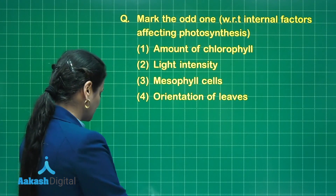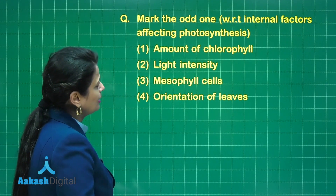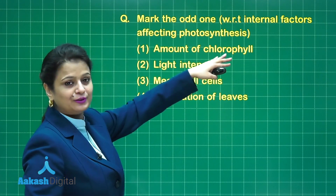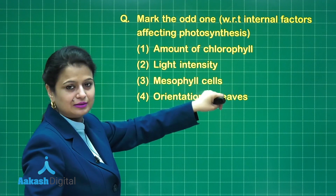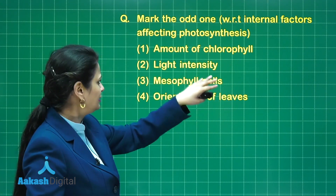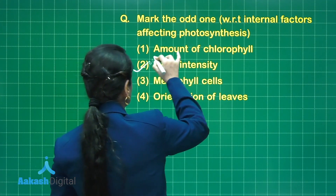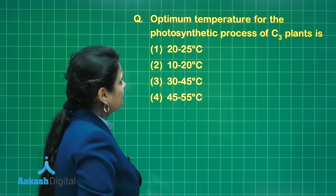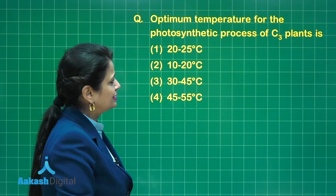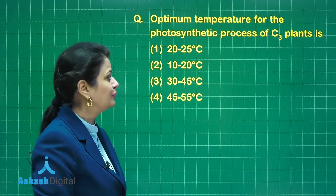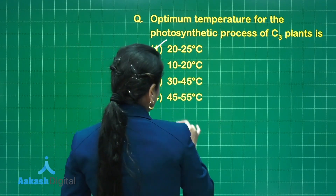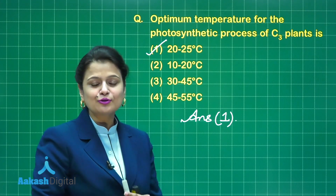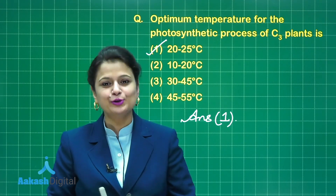Now let's take a few questions. First: mark the odd one out with respect to internal factors affecting photosynthesis. The options include amount of chlorophyll — internal factor; mesophyll cells — internal factor; orientation of leaves — internal factor; and light intensity — this is an external factor. So the answer is light intensity. Second question: the optimum temperature for the photosynthetic process of C3 plant cells — as we just discussed, it is 20 to 25 degrees Celsius. So the answer is option one.